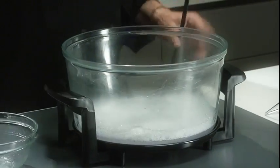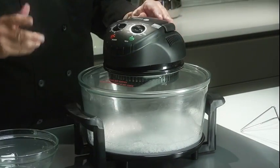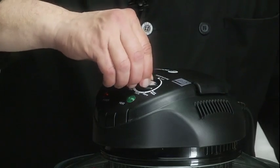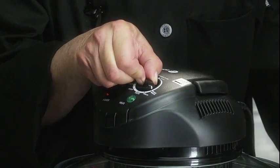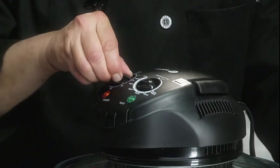Now place the lid back on and set your timer control to the wash temperature and give it about 10 or 15 minutes.